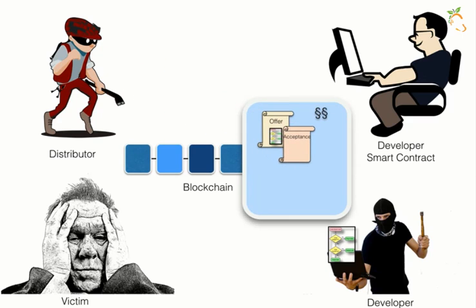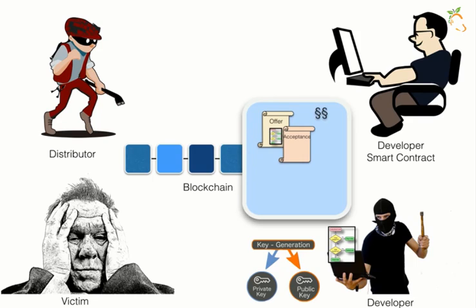The developer of the ransomware creates a private and public key pair that will be used for the encryption of files on the victim's computers. The encryption key will be integrated into the ransomware software, and the public key will be stored in the smart contract.